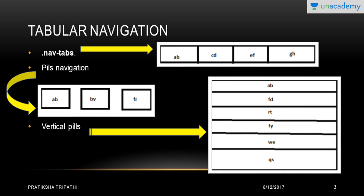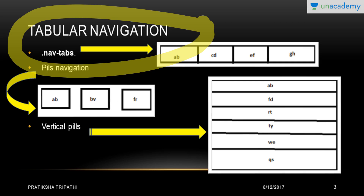Next we have tabular navigation. Navigation is very important in your webpage because a webpage may consist of multiple pages. You must have seen that when you search anything on Google, it gives you 10 to 15 or maybe 30 to 40 webpages. In one webpage there may be 10 other pages attached to it. So if I want to go from one page to another, I need a navigation bar. Without a navigation bar I cannot move — so navigation is a very important phenomenon in webpages.